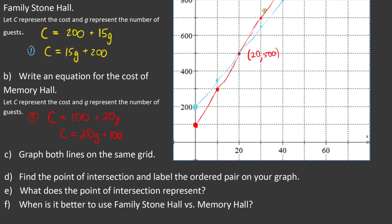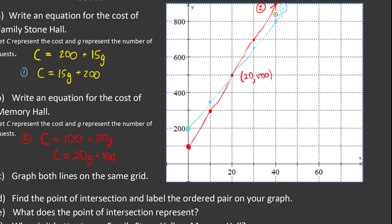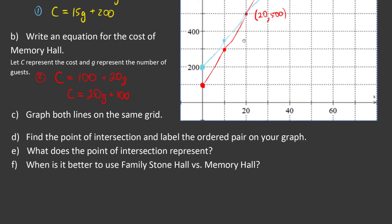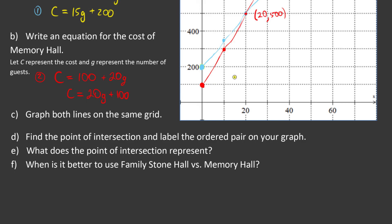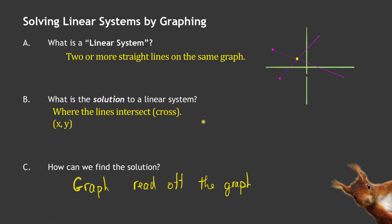If we ask for more than 20 guests, or if we have more than 20 guests coming, one of those halls will be more expensive than the other. And as a matter of fact, it says here, when is it better to use the Family Stone Hall? Family Stone Hall is my blue graph. It's the first one here. It is more advantageous to rent from Family Stone Hall if you're going to be inviting more than 20 guests, because you can see it becomes less expensive than the other one. However, Memory Hall is going to be less expensive. That's the red line. It's going to be less expensive if you have less than 20 guests. If you know you're going to have 20 on the dot, it really doesn't matter which one you use. And that's actually how people will choose a rental hall for different scenarios that they're doing, or even cell phone plans.